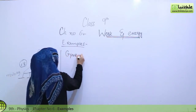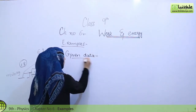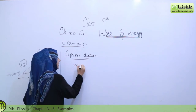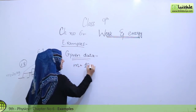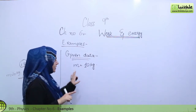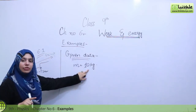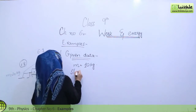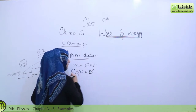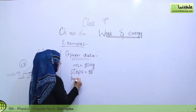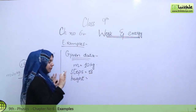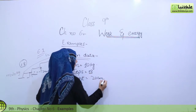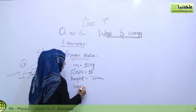Given data: mass is 10 kg — note that was mass, not weight. The girl has to go upward. We have 18 steps. The height of each individual step is 20 cm. And what we have to find out is work done.